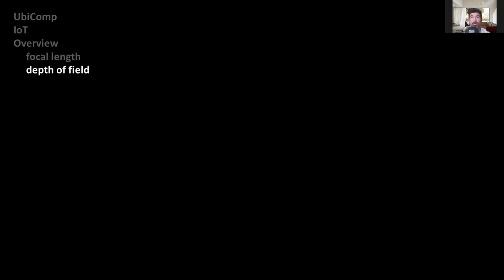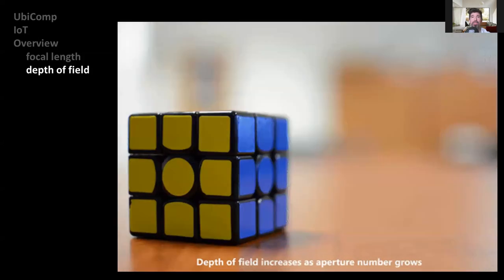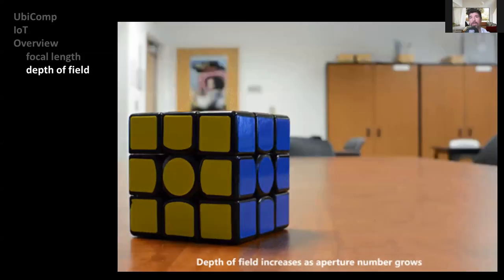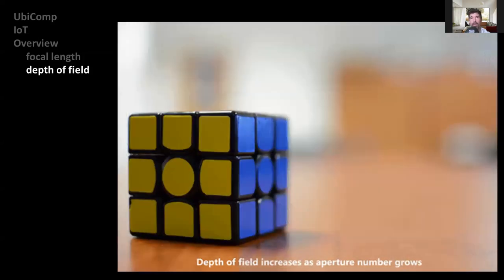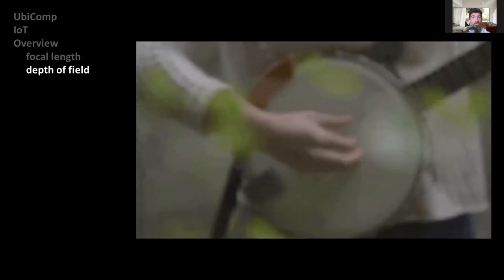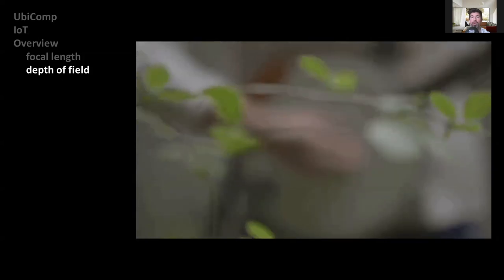The second one is the depth of field, described as the distance between the nearest and the furthest objects that are in acceptable sharp focus in an image capture with a camera. By combining these two features, we can divert our attention to something that is closer or further away from us, keeping it in focus and blurring all the rest.